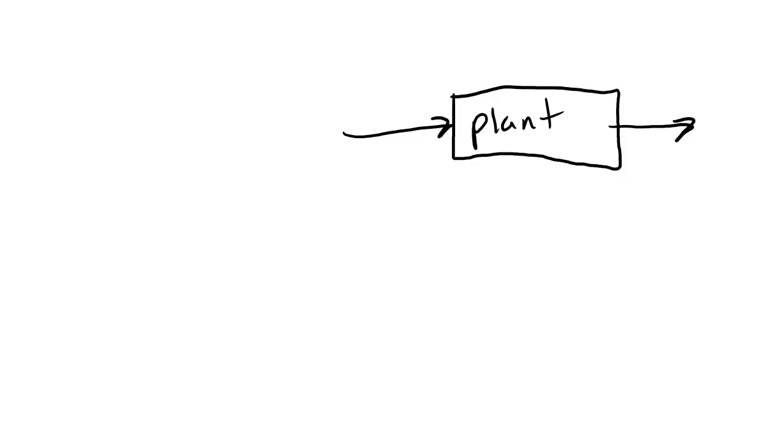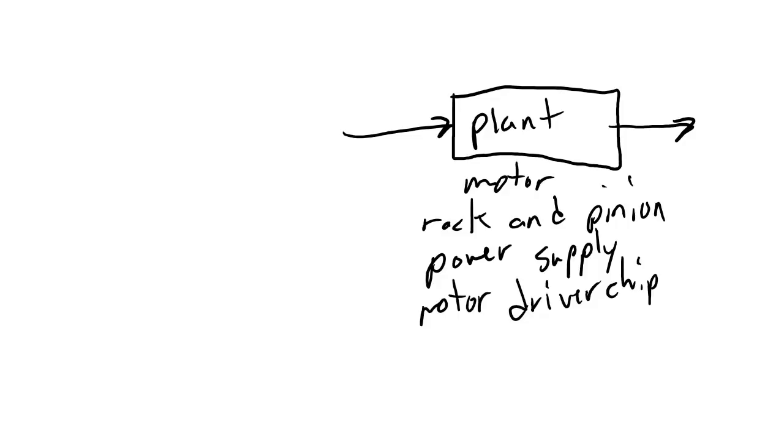I'm going to label this one block plant. Plant is a bit of controls terminology that we use to refer to our whole system that we're trying to control. So in our particular application the plant includes the motor, the rack and pinion, the power supply, the motor driver chip, and even all of the wires and other parts that are a part of the system that moves the rack and pinion together.